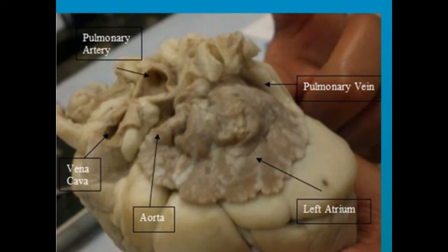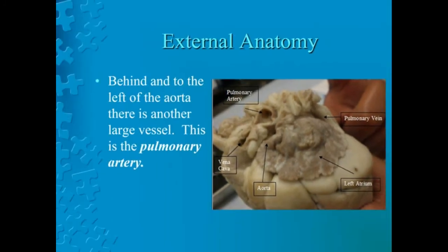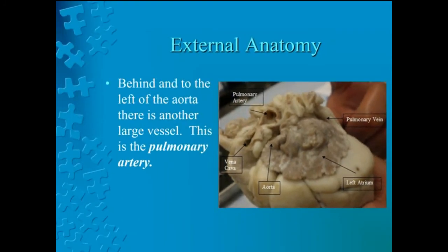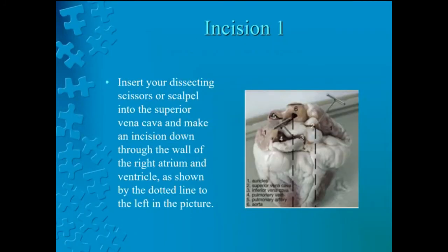Now that we have observed the heart externally, let's begin to look at its internal structure. Insert your dissecting scissors or scalpel into the superior vena cava and make an incision down through the wall of the right atrium and ventricle as shown by the dotted line in the picture. We will pause to make the cut.